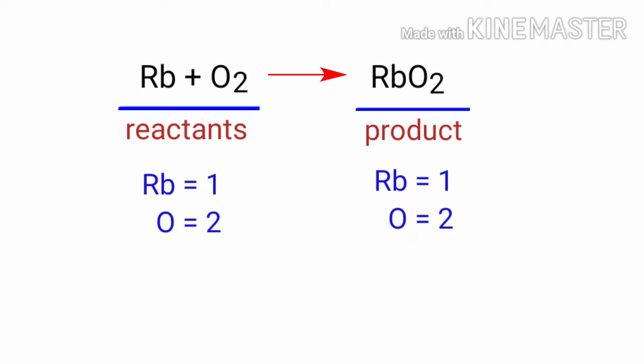If you look at this equation, the number of atoms on the reactant's side is the same as the number of atoms on the product's side. There are one rubidium atom and two oxygen atoms on both sides.